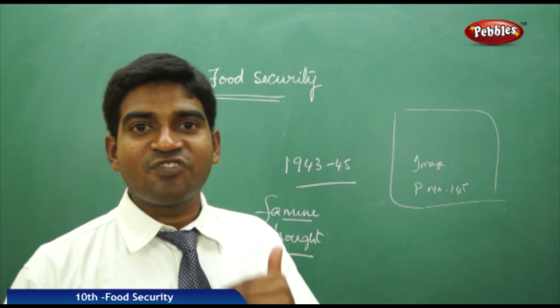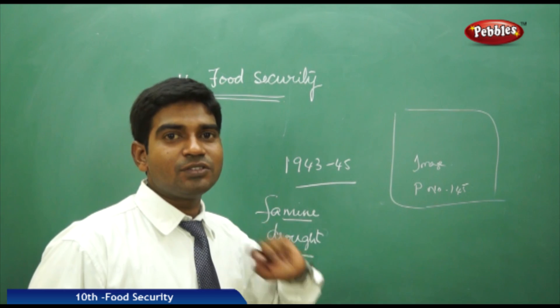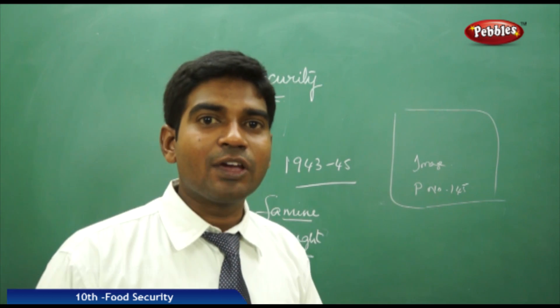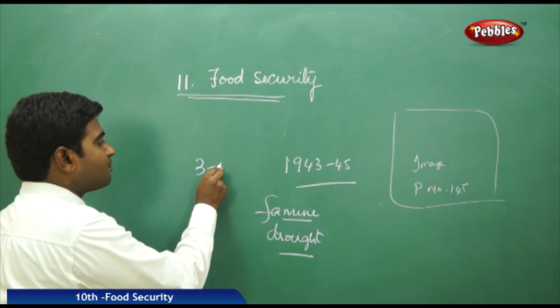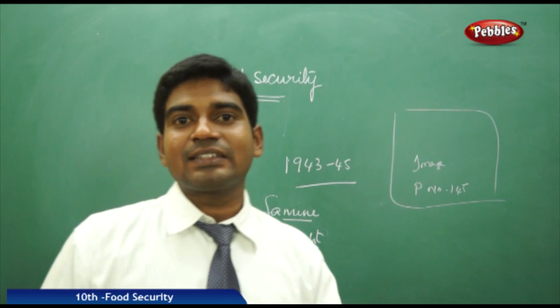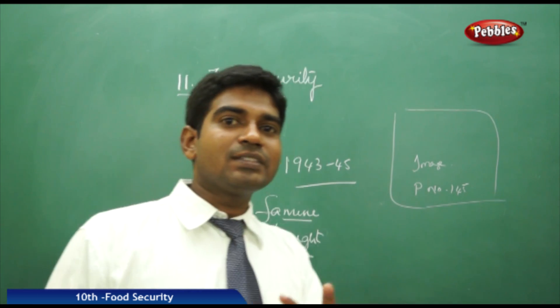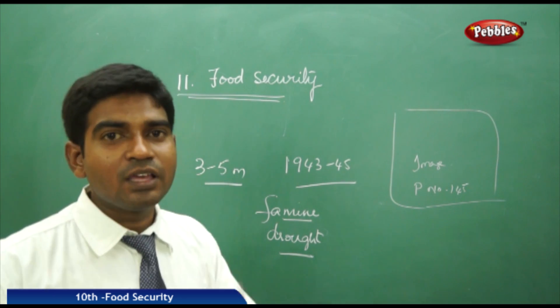We have an example from 1943 to 45. If you look at the image here, we can get the clarity that in Bengal during the 1943-45 period, nearly three to five million people died from lack of food. What is the scenario that led to this kind of situation where three to five million people passed away without having proper food?